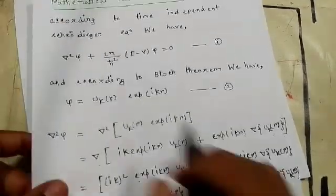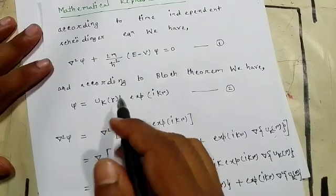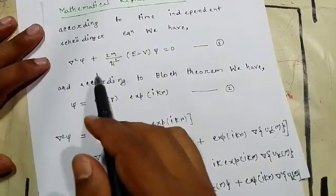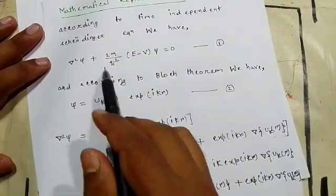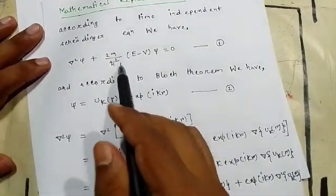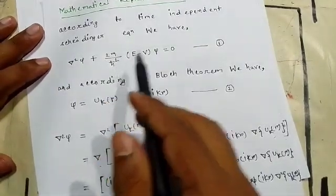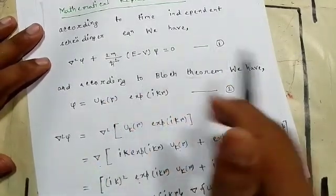Actually, the Schrödinger equation should be del²ψ + (2m/ħ²)(E − V)ψ = 0. That is the correct form.